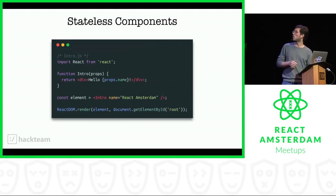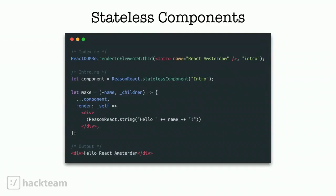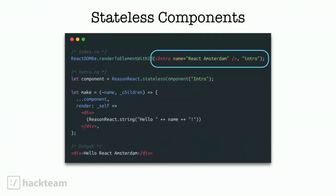Let's see what a Reason stateless component looks like. In regular React you import React, create a small stateless component, and render it using ReactDOM. In Reason this looks a little different — we still have the ReactDOM, we inject JSX with a prop called 'reactAmsterdam', and we define our component. All the magic happens inside the make function where we define a prop. In this case it's just 'name', which we render using a ReasonReact string that outputs 'Hello name'.